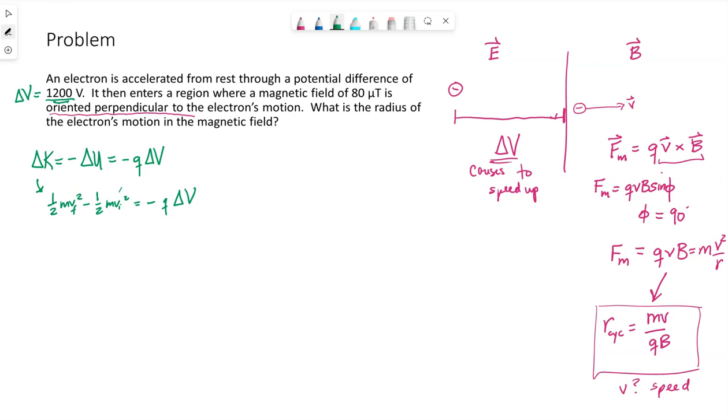We're told that the electron starts at rest, so this initial kinetic energy term is zero. So the speed, if we just solve for this v final, this is the speed at which this charge will be moving as it gets through this region with an electric field.